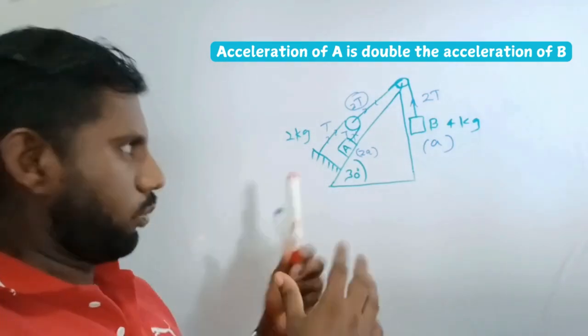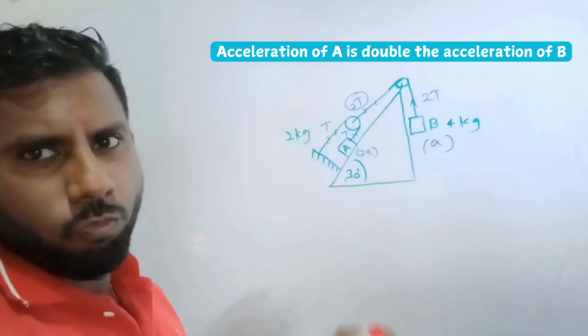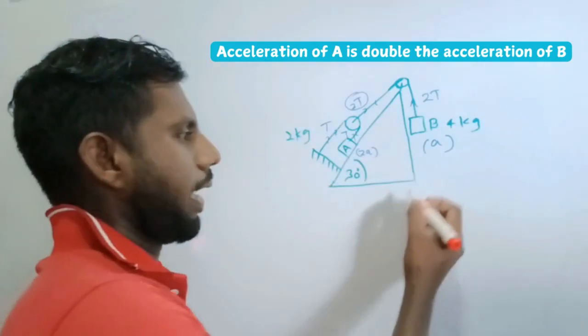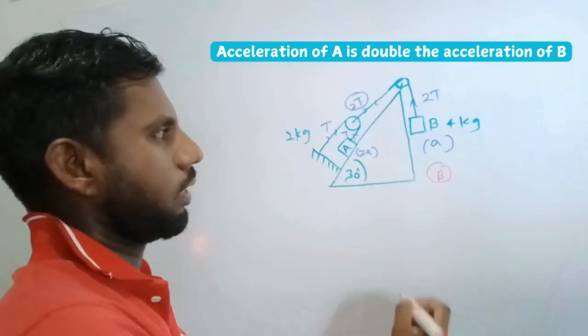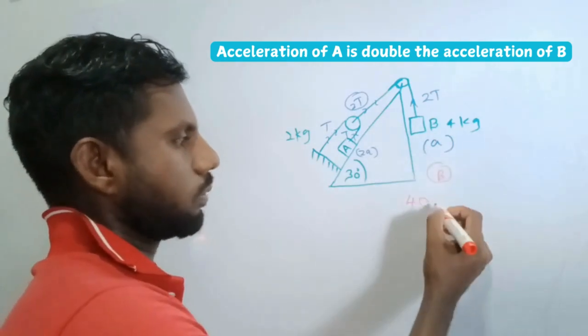apply F=ma for both A and B. For B, let's apply F=ma. Downwards we have 40 Newtons, so 40 minus 2T equals mass times a, which is 4 times a. This is the first equation.